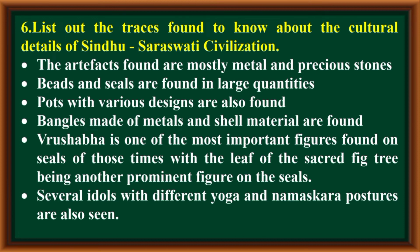List out the traces found to know about the cultural details of Sindhu Saraswati Civilization. The artifacts found are mostly metal and precious stones. Beads and seals are found in large quantities. Pots with various designs are also found. Bangles made of metals and shell material are found. Vrushabha is one of the most important figures found on seals of those times, with the leaf of the sacred fig tree being another prominent figure on the seals. Several idols with different yoga and namaskara postures are also seen.